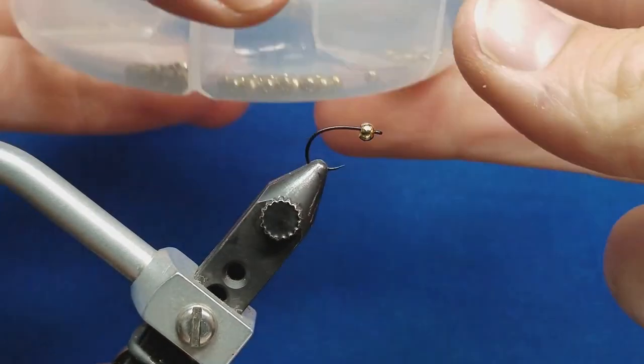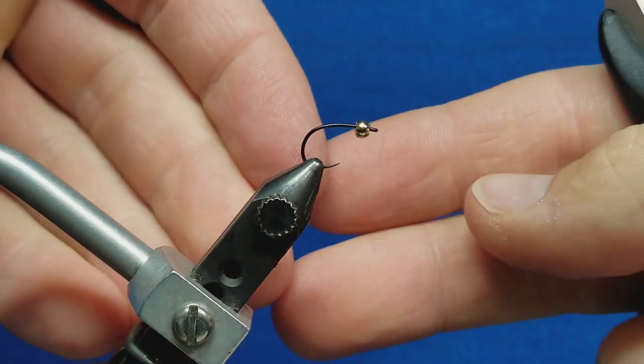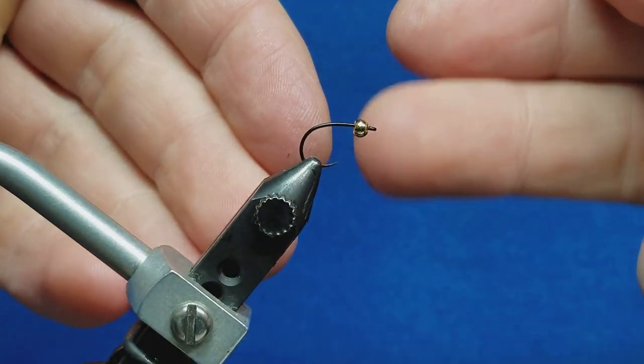Tungsten is the most common because tungsten has the highest density and the highest sink rate. So that's why you most commonly see that with a nymph pattern. It's going to get your pattern down quickest.